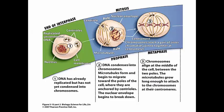Mitosis occurs in four steps: prophase, metaphase, anaphase, and telophase — P-M-A-T. There are certain events that occur within each phase.